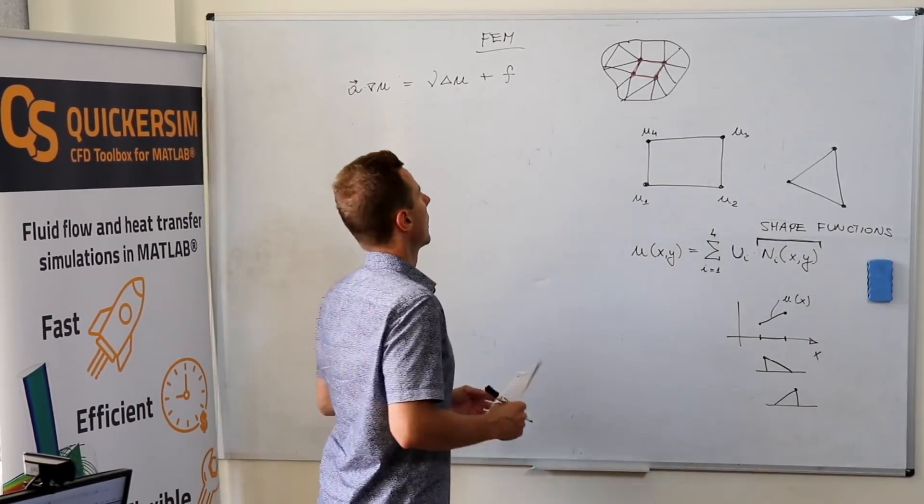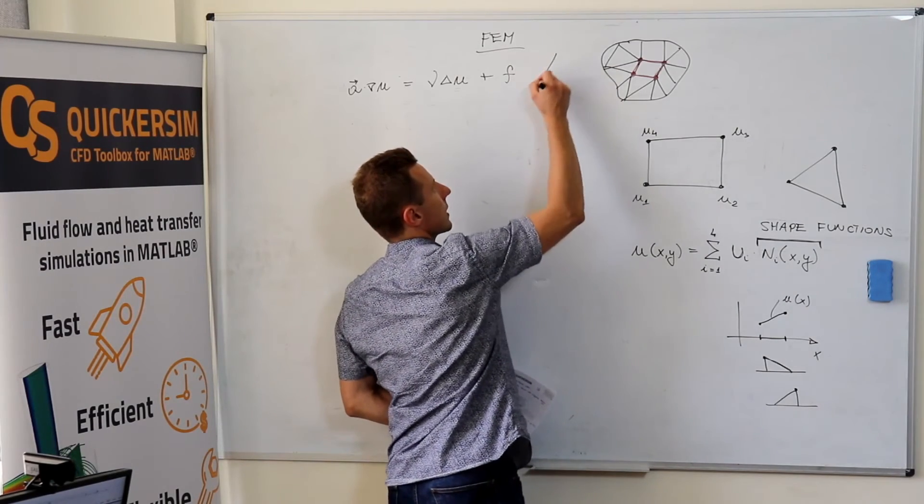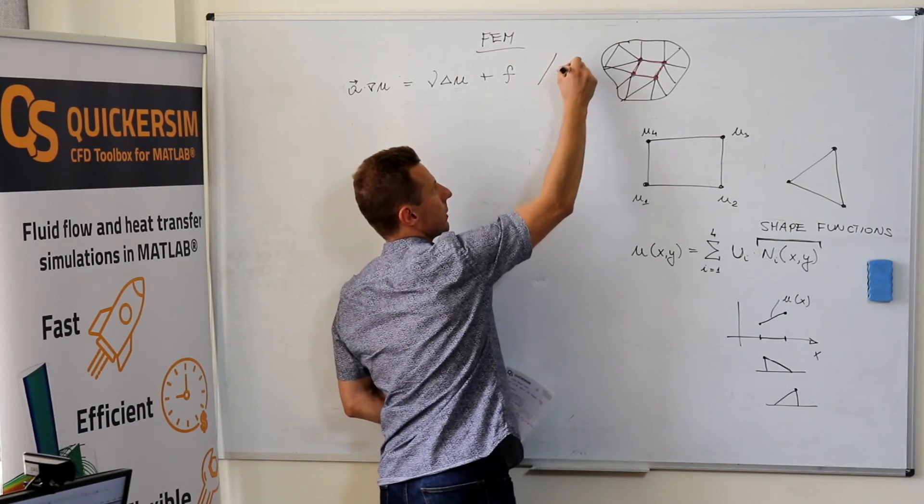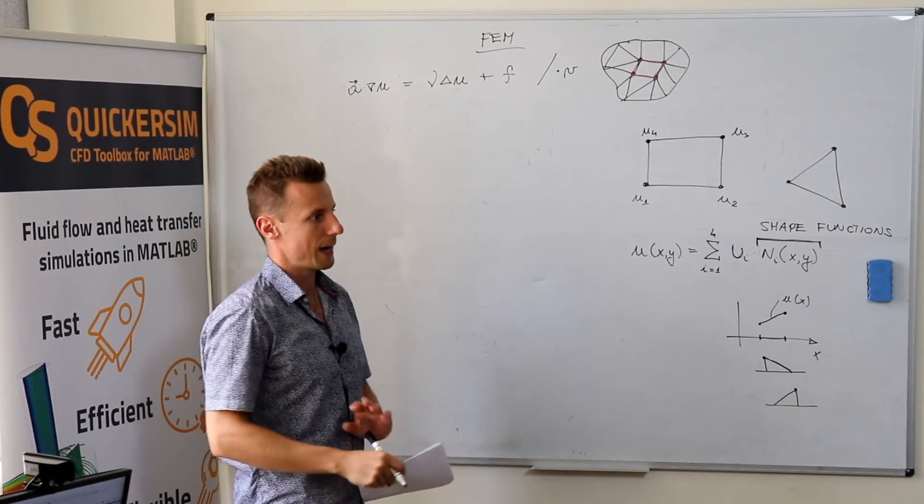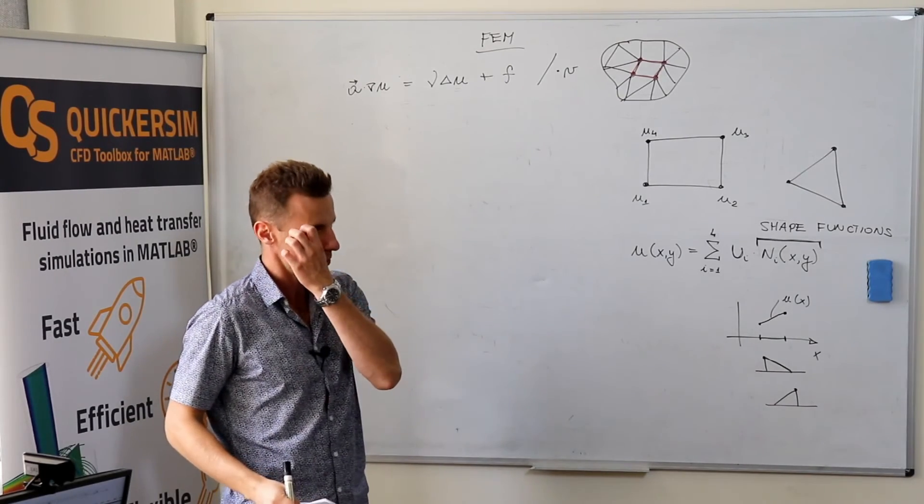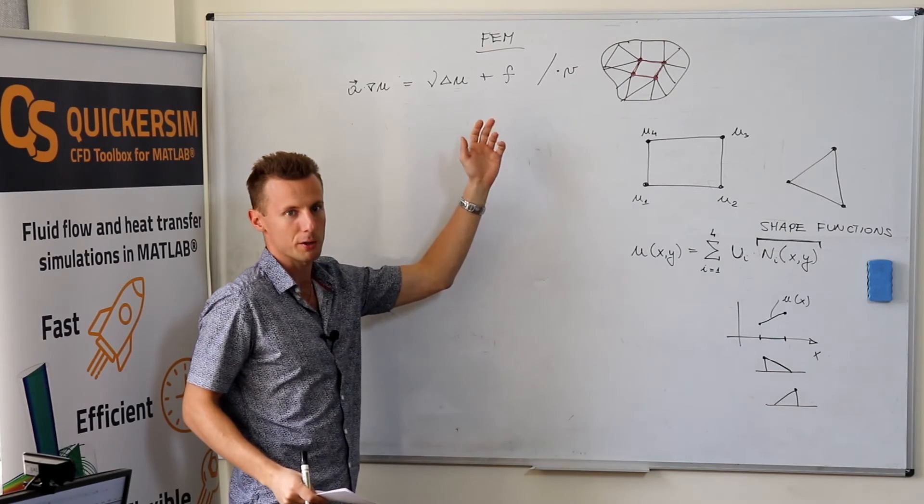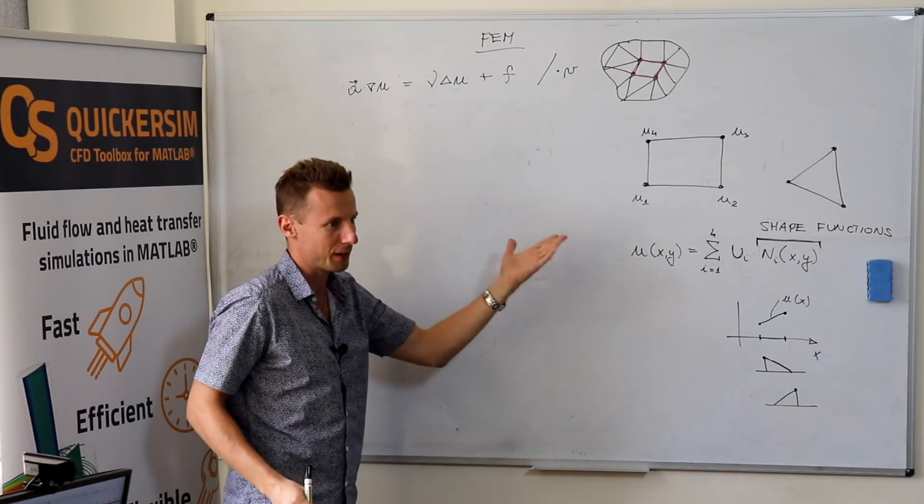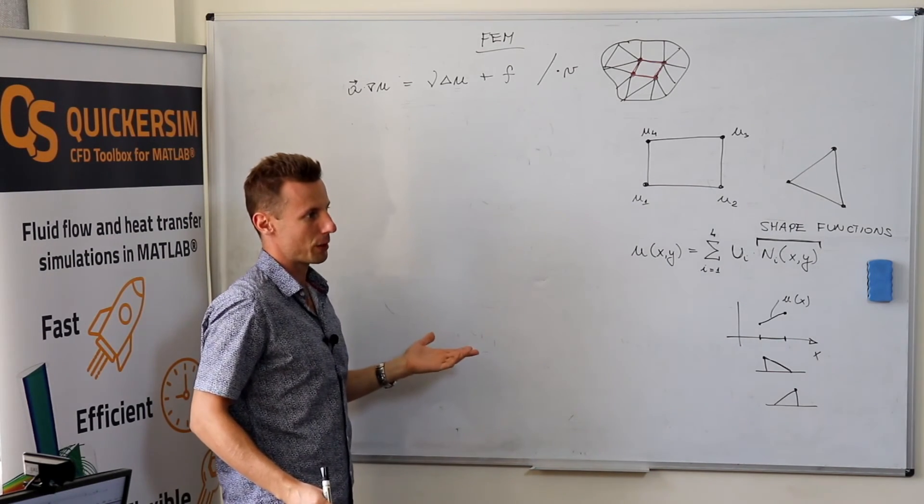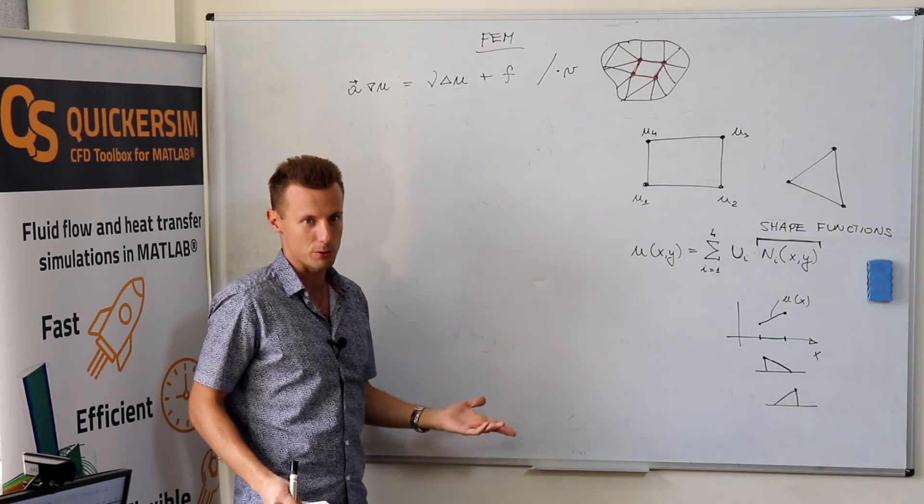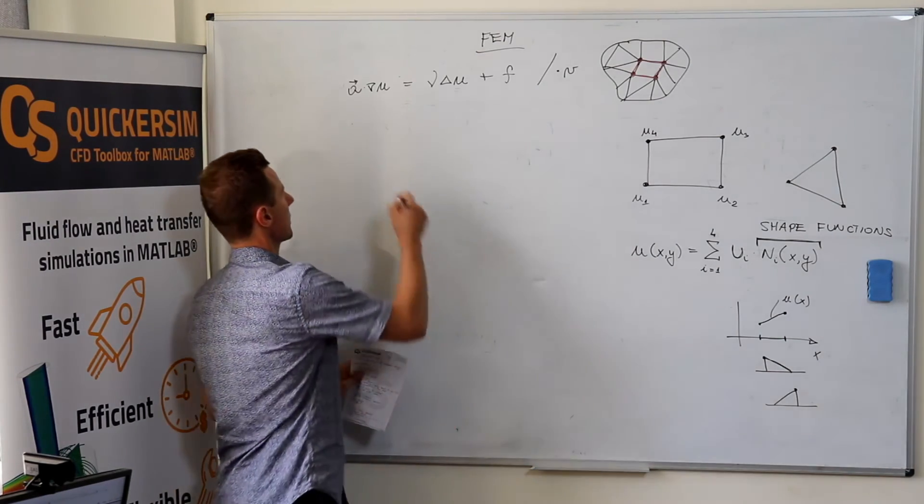Now, we are going to do something different. Namely, we want to say, okay, let's multiply it by any arbitrary function v. If you've got the equation, you can multiply it by anything. If you apply the same operation to both sides of the equation, then the equation should still hold. So, let's do it.